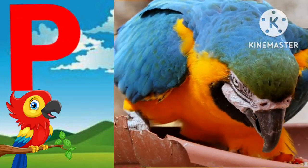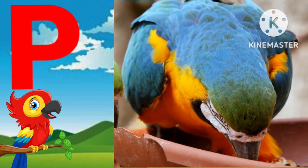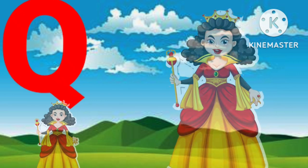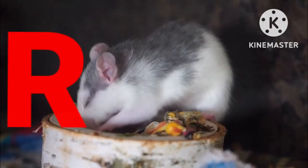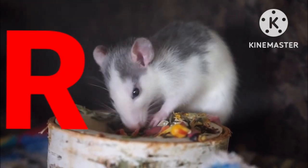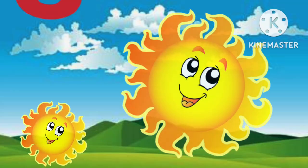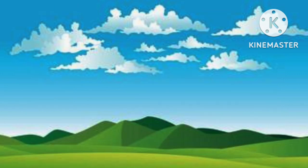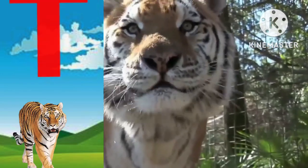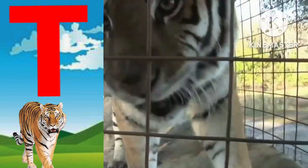P for parrot, Q for queen, R for rabbit, S for sun, T for tiger.